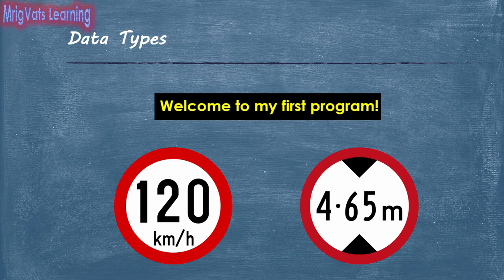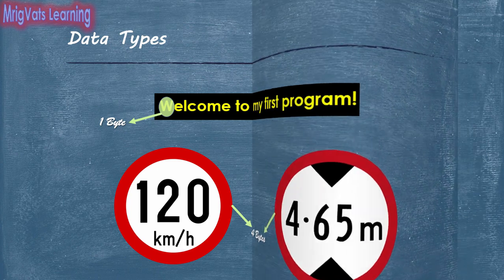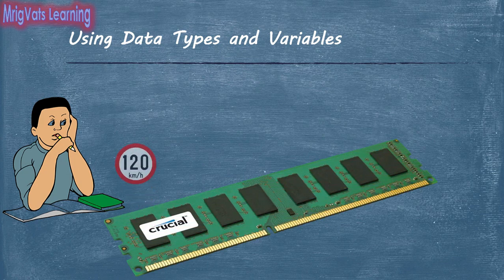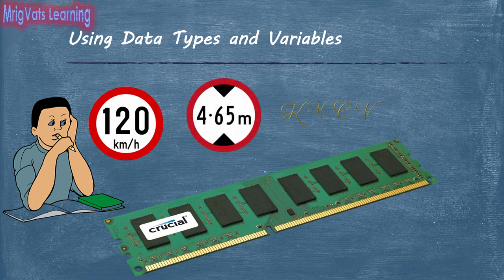Each data type has a memory requirement associated with it. Text has one byte associated with each character, while integer and decimal have four bytes associated with the number. Therefore, you should always consider the use of a variable before creating it, because memory of the computer is limited and you must use it to the optimum.